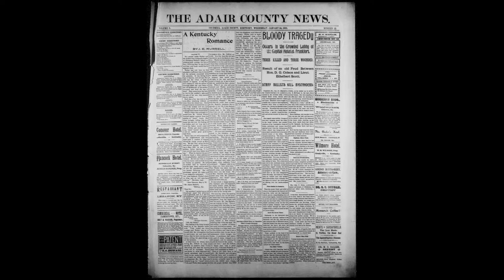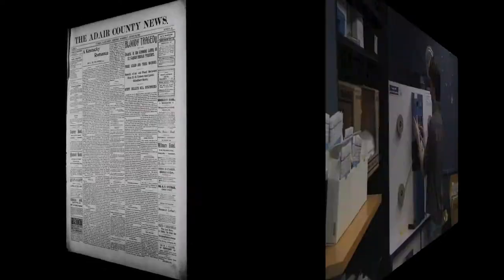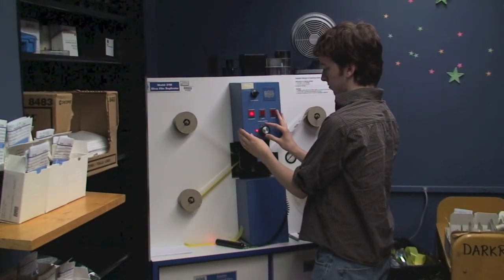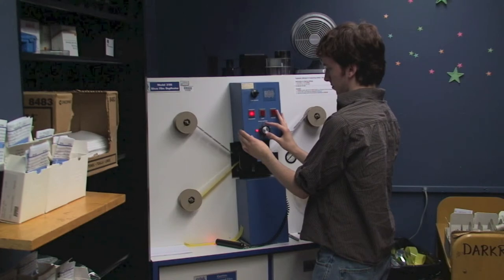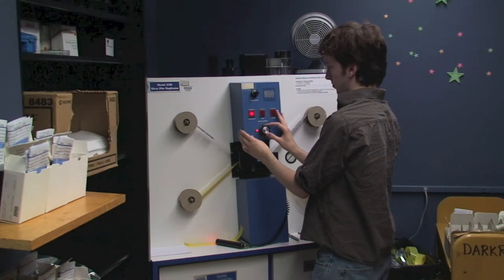As diazo and vesicular have been used less and less, it has become harder to know which generation of silver film you're actually looking at. Duplicates are made through contact printing, emulsion to emulsion. You might not know exactly which generation you're looking at, but you can make a pretty good guess this way.